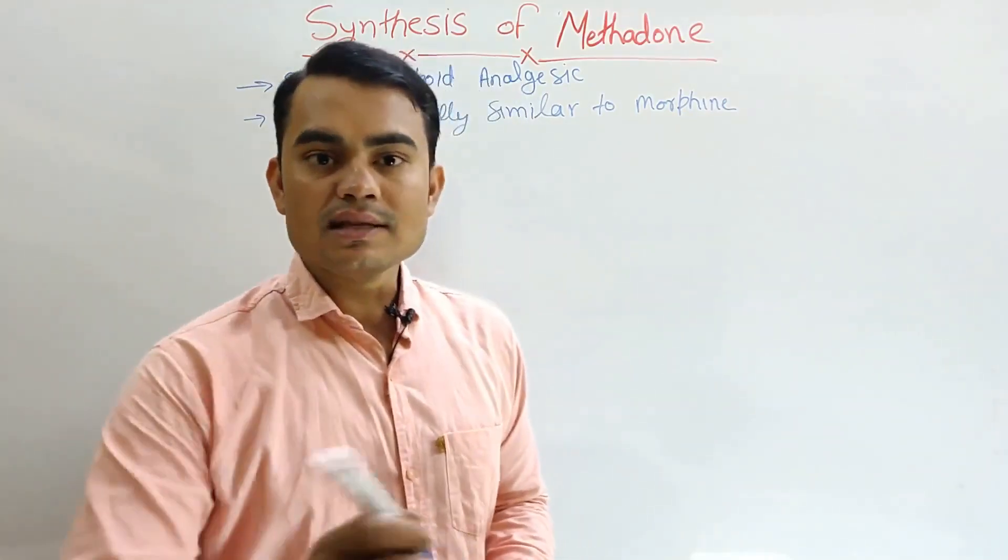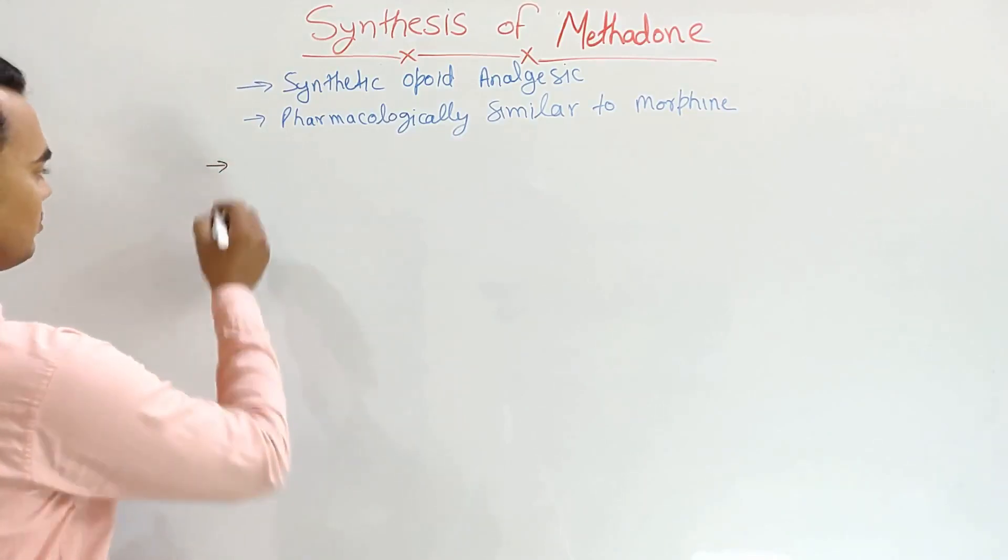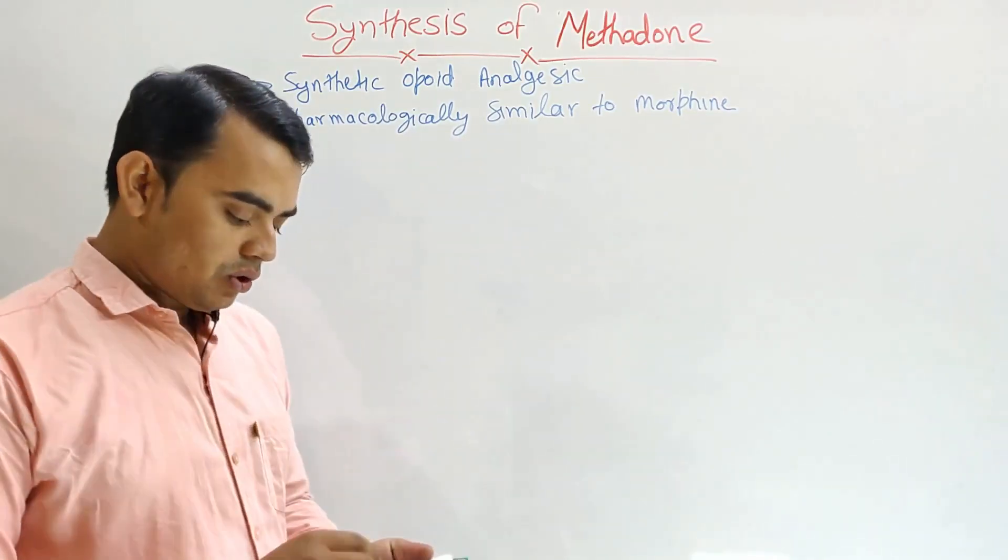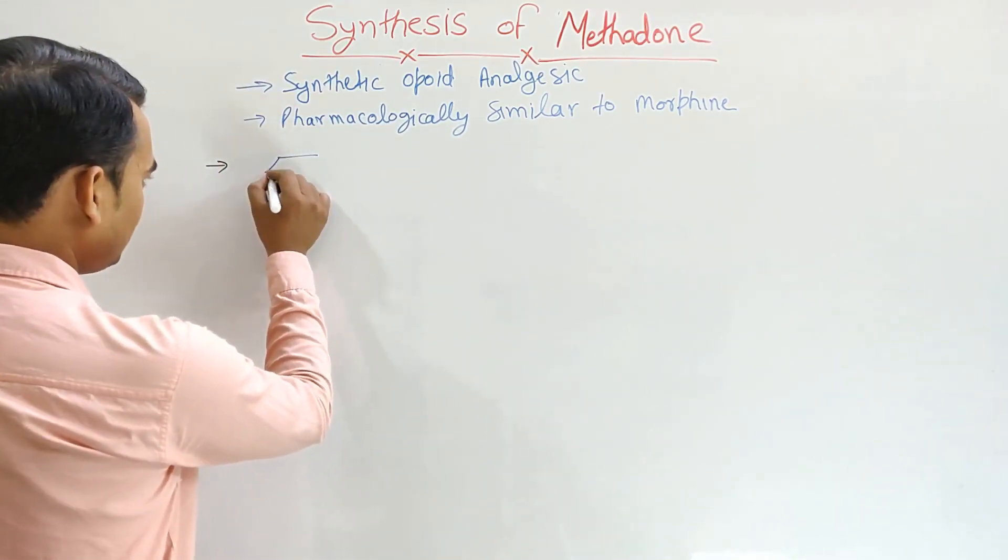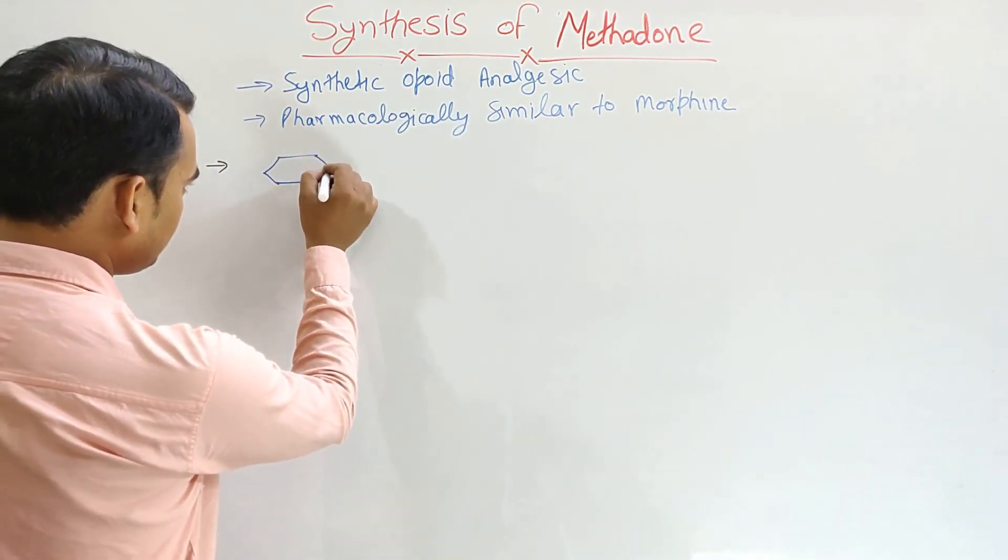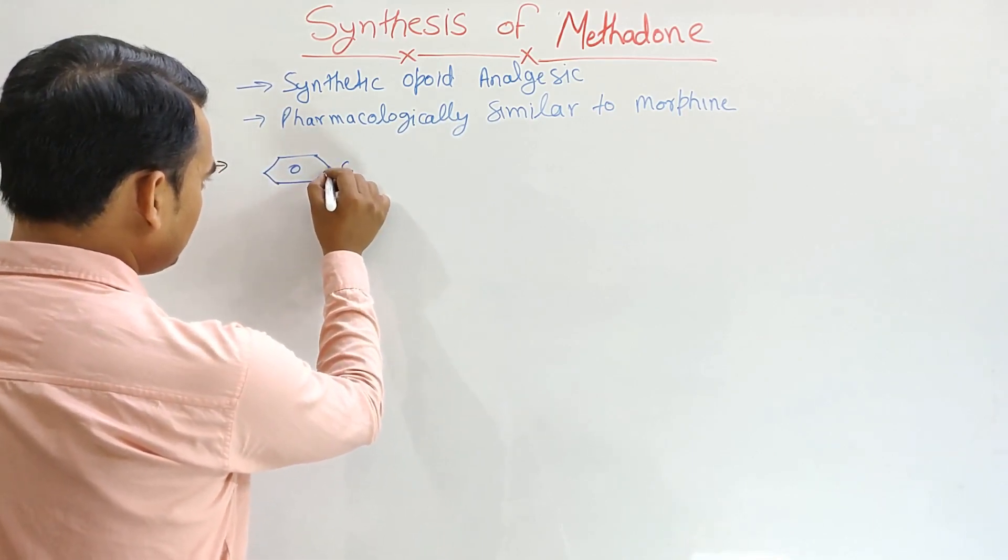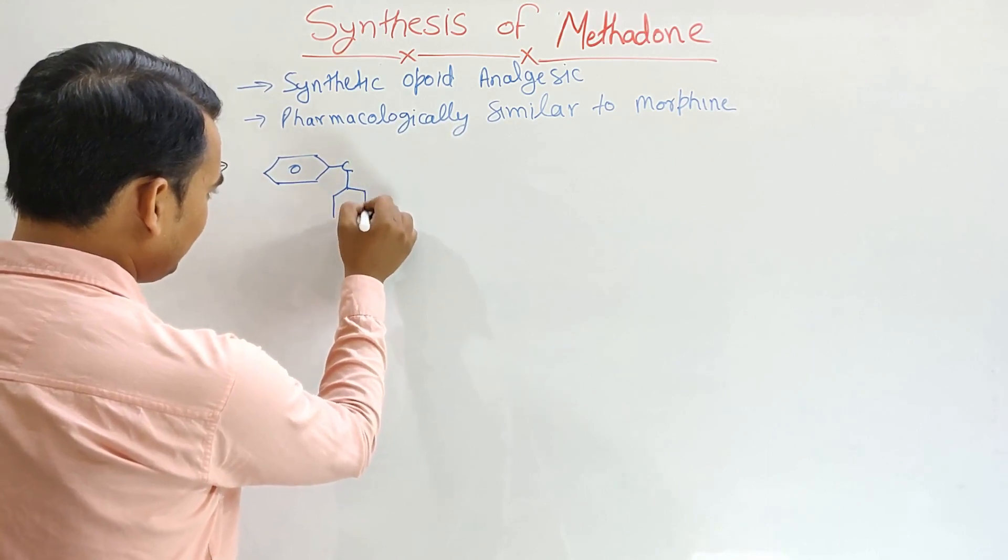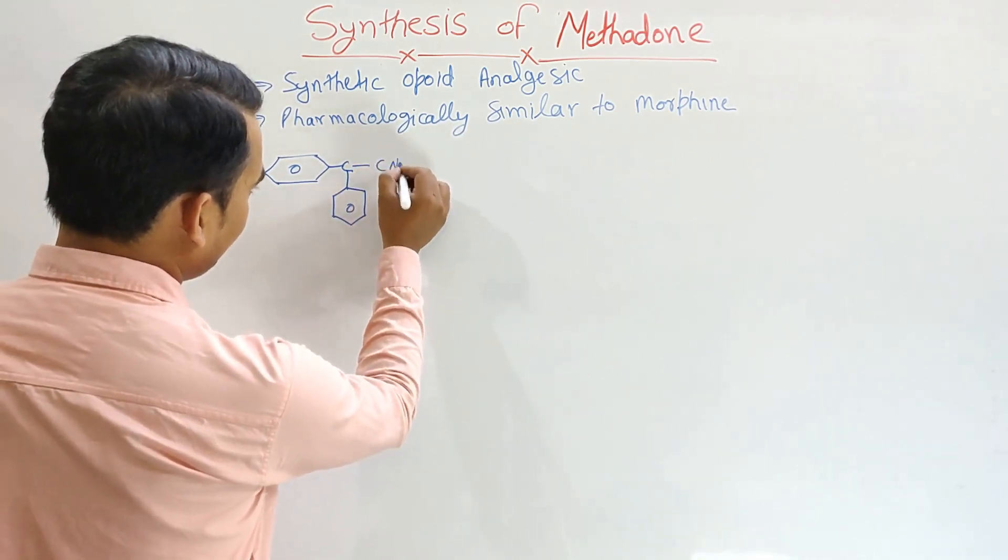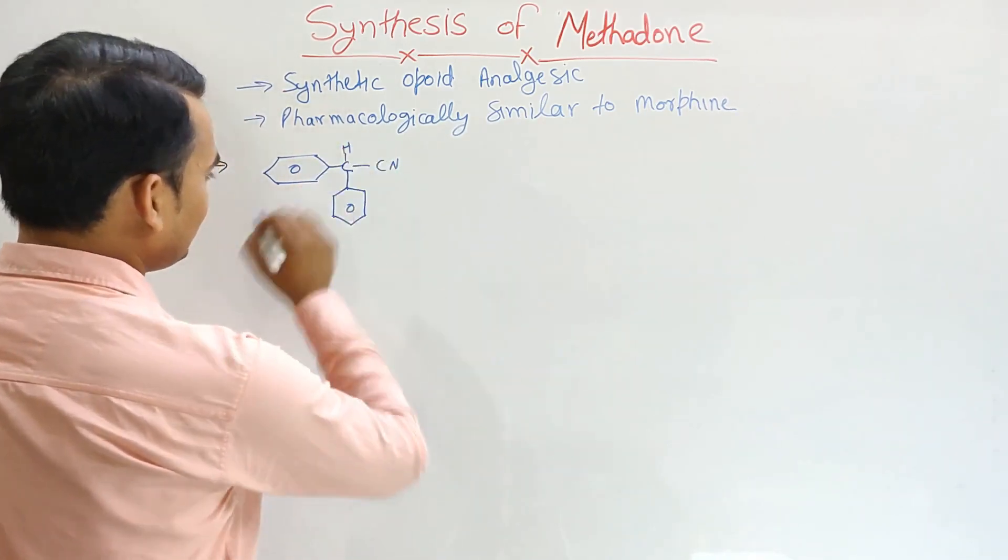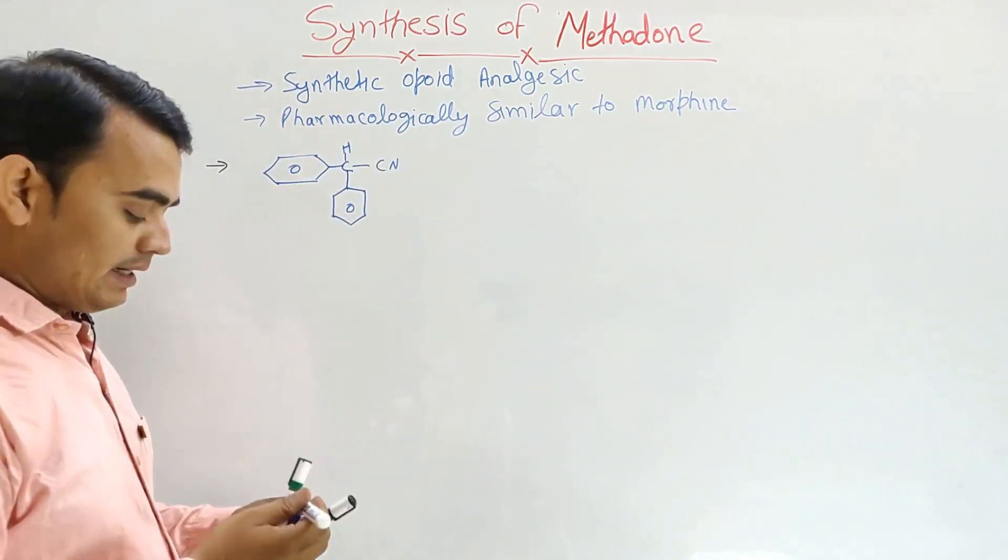Now let's discuss the synthesis of methadone. The synthesis of methadone is started from 2,2-diphenyl-acetonitrile. Here phenyl, also have the phenyl, here it has CN and here it has H.